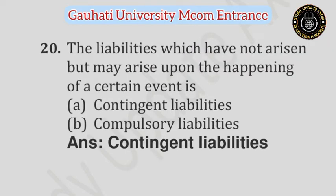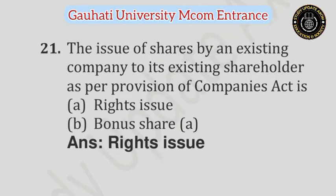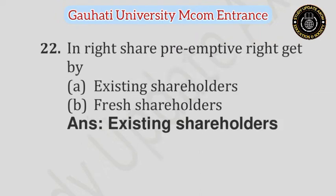Question number 20: The liabilities which have not arisen but may arise upon the happening of a certain event is — Option A: Contingent Liabilities, Option B: Compulsory Liabilities. Answer is Contingent Liabilities. Question number 21: The issue of shares by an existing company to its existing shareholders as per the provision of the Companies Act is — Option A: Right Issue, Option B: Bonus Share. Answer is Right Issue. Question number 22: In right share, preemptive right is given to — Option A: Existing Shareholder, Option B: Fresh Shareholder. Answer is Existing Shareholders.